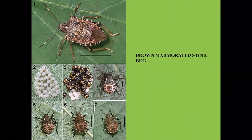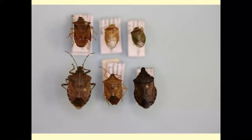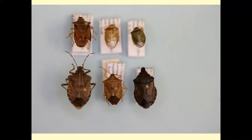Brown marmorated stink bug is becoming established in Alabama, and we continue to find it in more and more counties every year. The immature stage walks kind of on its tiptoes out in the field and is easily distinguished from other immature stink bugs. This slide shows the relative sizes of different stink bugs. The bottom left is the brown marmorated stink bug, above it is the predaceous stink bug with pointed shoulders, the second from the left is the red banded stink bug, the third from the left on top is the red shoulder stink bug, and next to the brown marmorated is the brown stink bug.